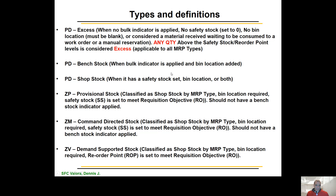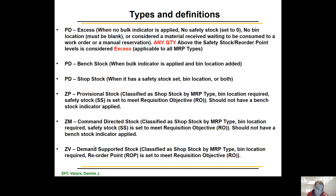When talking about bench stock, make sure you have the bin indicator applied and the bin location added — that's a requirement for bench stock. For shop stock, you need a safety stock set, a bin location, or both. Your provisional stock requires a bin location and must be set to meet RO objectives; it should not have a bench stock indicator. Your ZP should not be set as a bench stock. Your ZM is your command-directed stock, classified as shop stock by the MRP type — it has a bin location, safety stock, and a bin indicator applied.